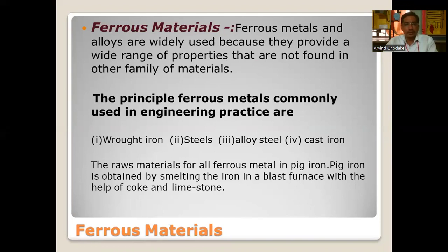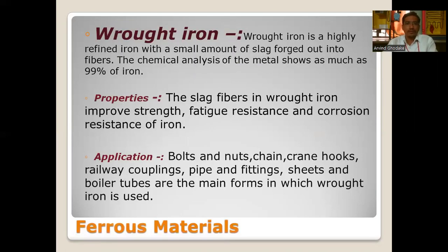After smelting, different types of steel and cast iron are formed. Wrought iron is a highly refined iron with a small amount of slag forged into fibers. Chemical analysis shows as much as 99% iron. The slag fiber in wrought iron improves strength, fatigue resistance, and corrosion resistance. Applications include bolts and nuts, chains, crane hooks, railway couplings, pipes and fittings, sheets, and boiler tubes.